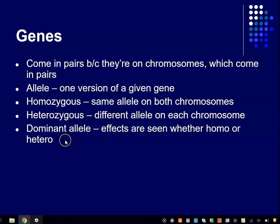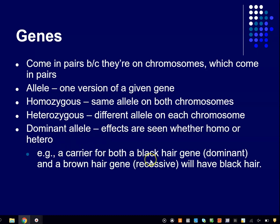Now we get into the idea of dominant and recessive alleles. A dominant allele is one where you see its effects regardless of whether you've got one copy of that allele or two. As long as you've got one copy, you're going to see its effects. If you have two copies, the second copy doesn't really do any more. Why would an allele be like this? Let me give you an example that might illustrate.